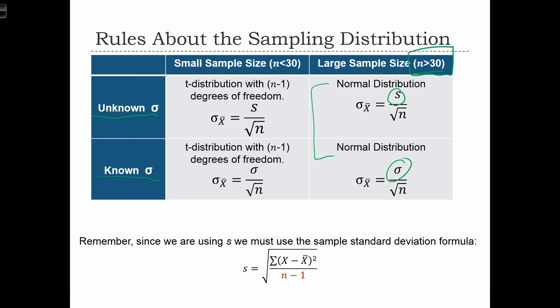When n is small, when n is less than 30, instead of the distribution being normal, we're going to assume that it has a t-distribution with n minus 1 degrees of freedom.